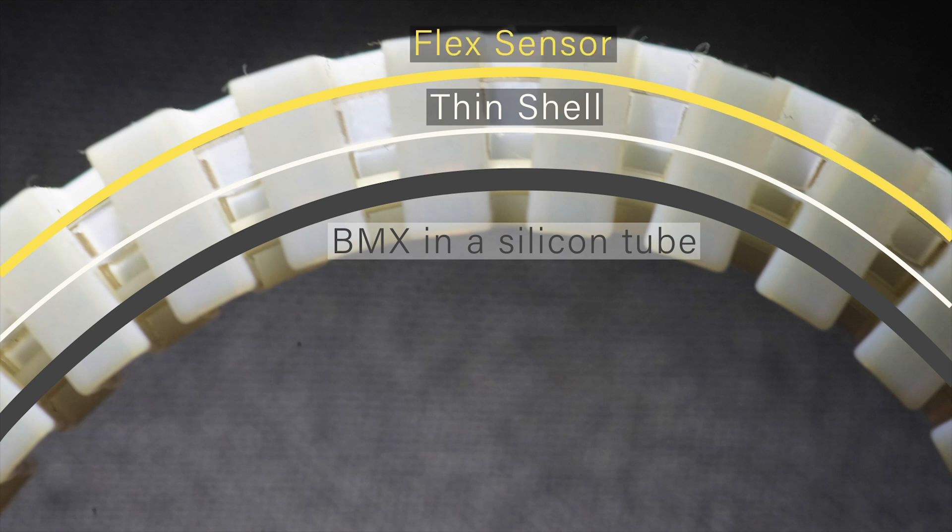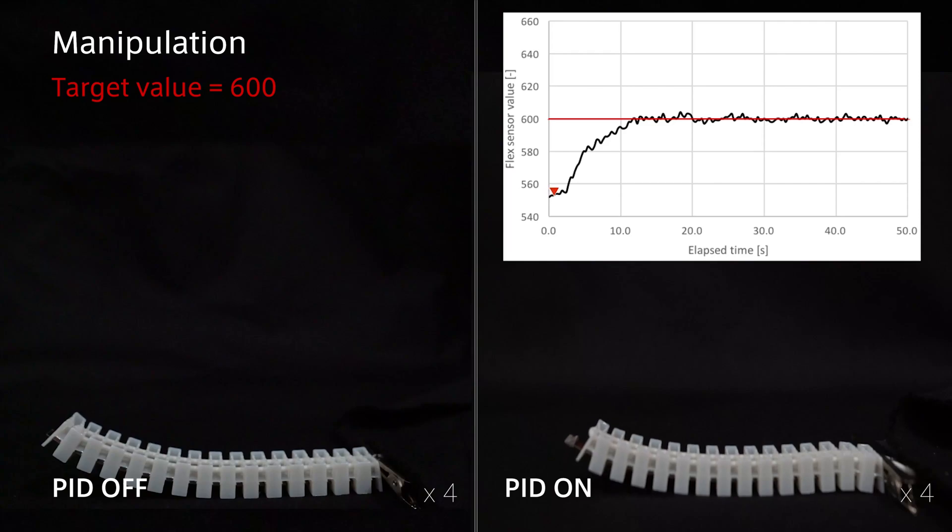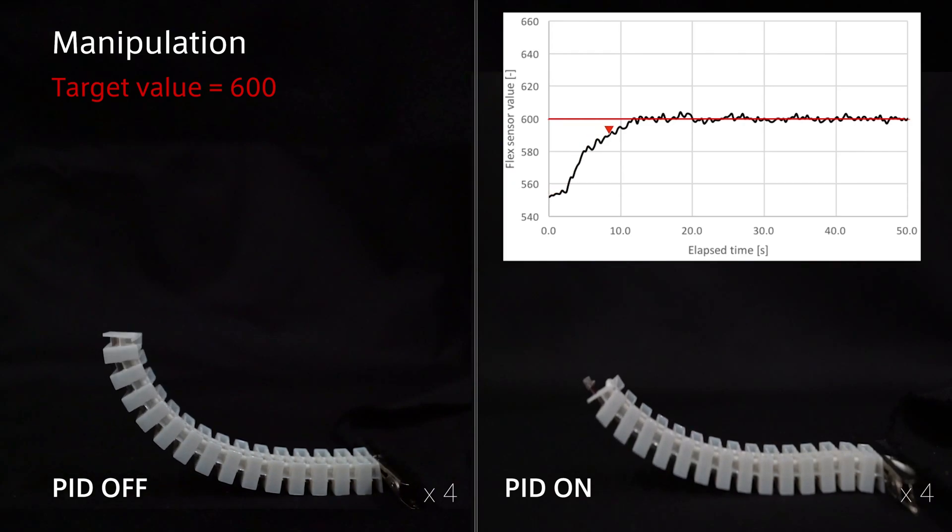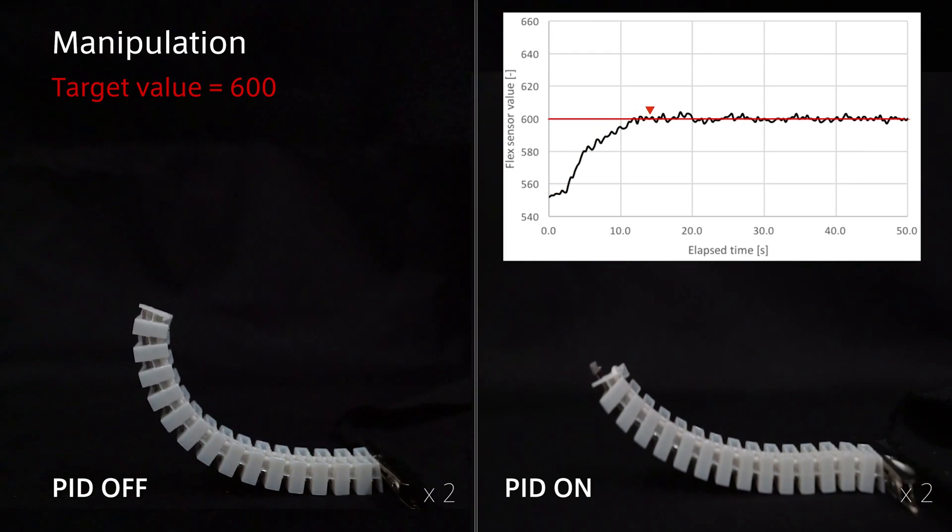It becomes possible to associate the value of bending sensor and deformation one-to-one. When control is not being done, the Coded Skeleton has two stable states.